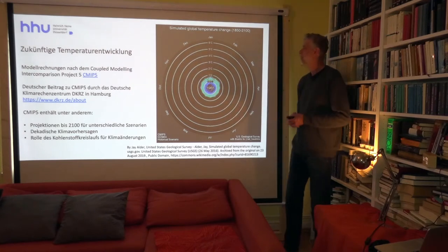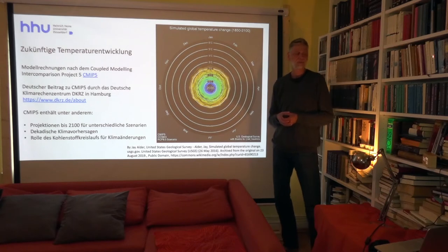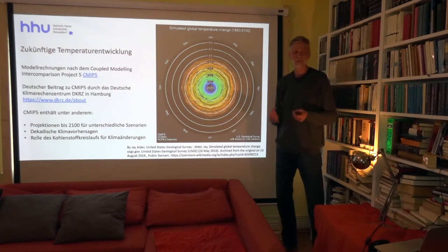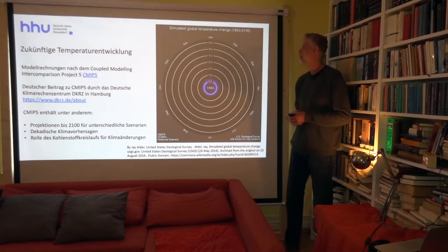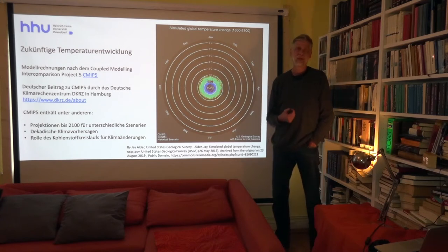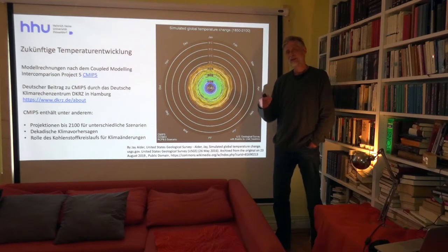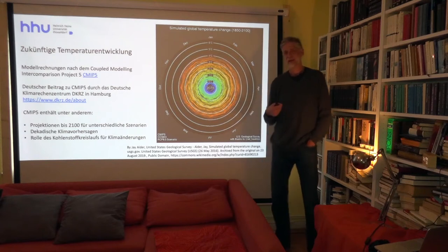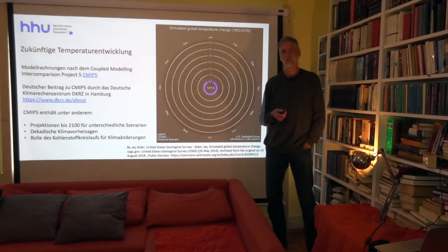Hier ist ein Modell genommen, das vom IPCC entwickelt wurde: das Coupled Model Intercomparison Project 5, oder CMIP5. Hier sehen wir eine Projektion bis ins Jahr 2100, und wir sehen, dass wir nach diesem Modell tatsächlich eine 5-Grad-Grenze erreichen. Da muss man immer vorsichtig sein – das sind Projektionen. Projektionen beinhalten Modellvorstellungen, die richtig oder falsch sein können, sowie Vorstellungen darüber, wie menschliches Handeln in der Zukunft aussehen kann. Wenn dieses sich ändert, werden sich natürlich auch die Projektionen ändern.